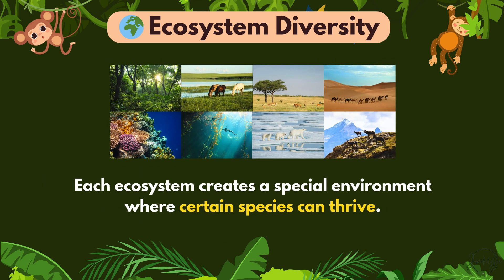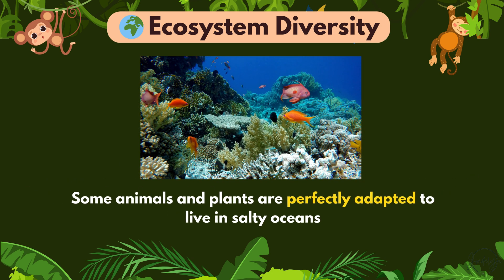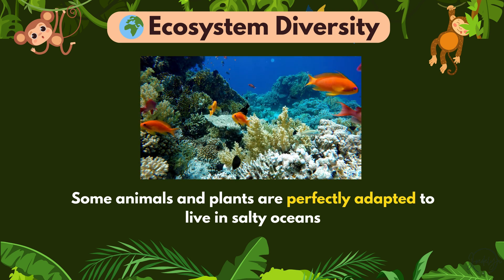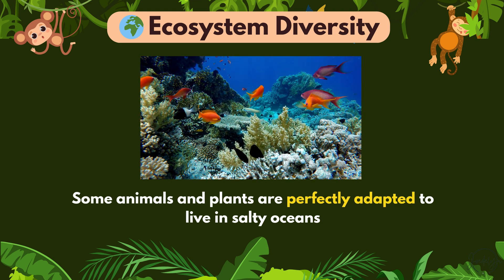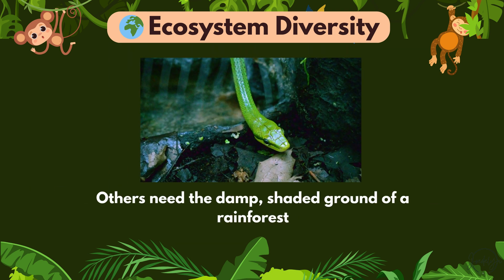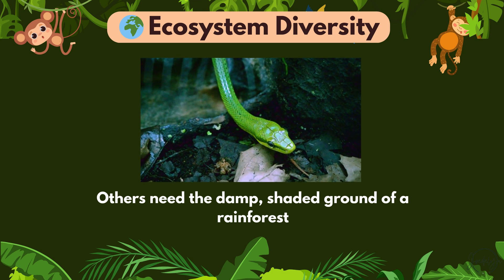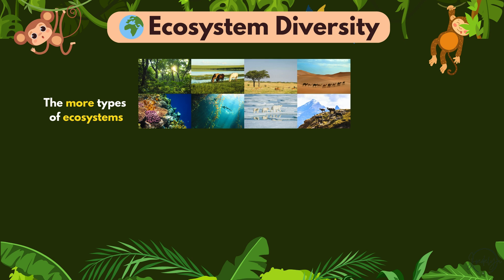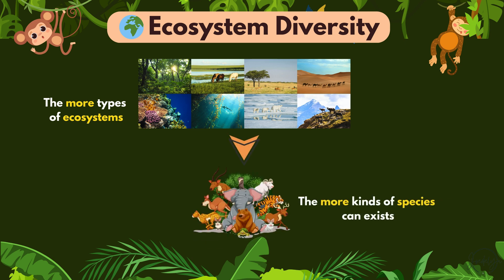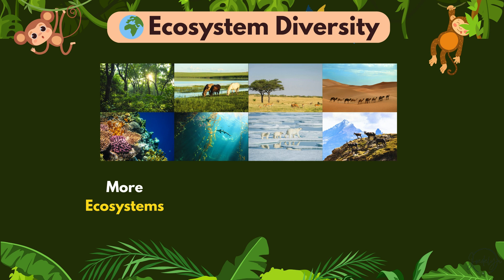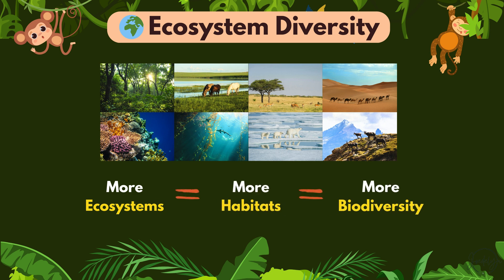Each ecosystem creates a special environment where certain species can thrive. Some animals and plants are perfectly adapted to live in salty oceans, while others need the damp, shaded ground of a rainforest. So the more types of ecosystems we have, the more kinds of species can exist. More ecosystems means more habitats, which means more biodiversity.